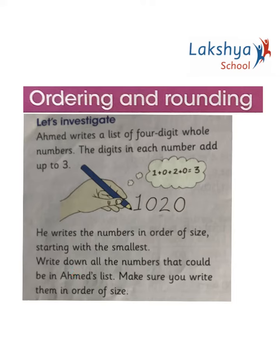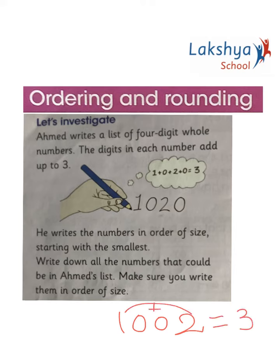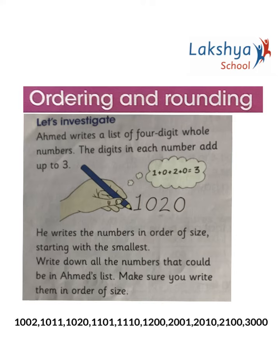The first number would be 1002, because 1 plus 0 plus 0 plus 2 gives us 3. Now work out how many numbers are possible and check with the list. After you work it out, verify your answers.